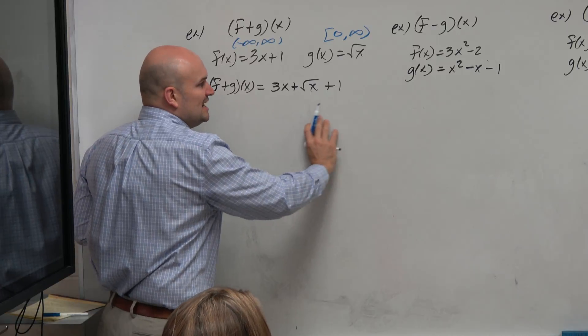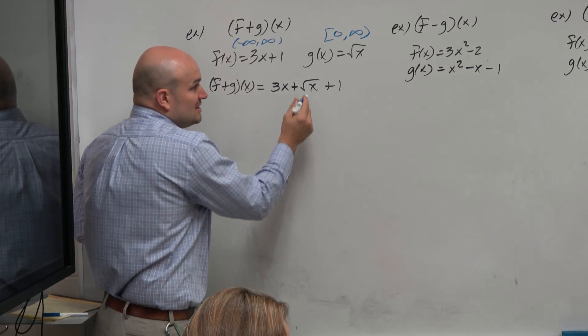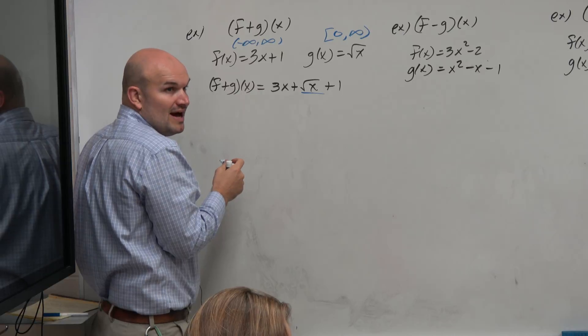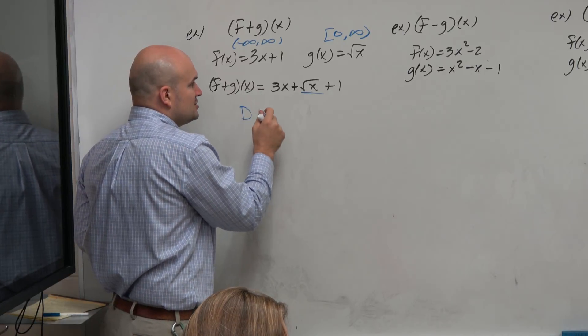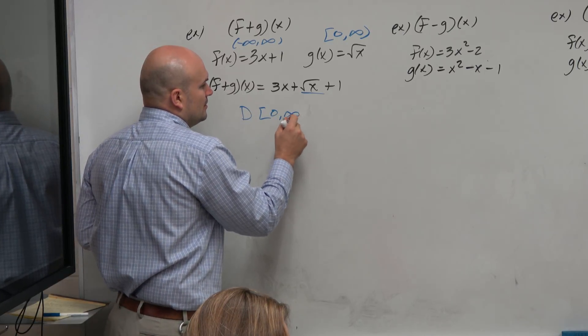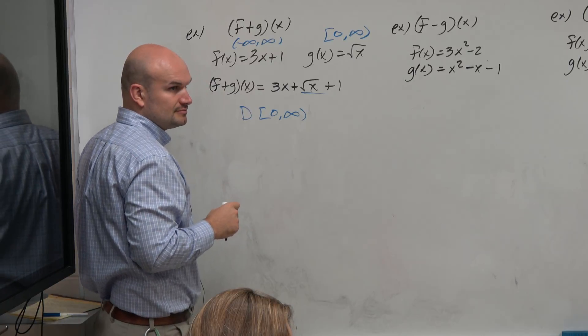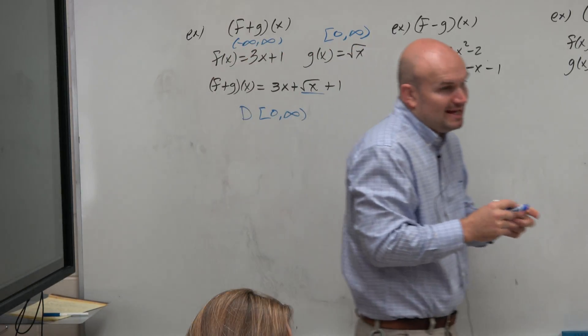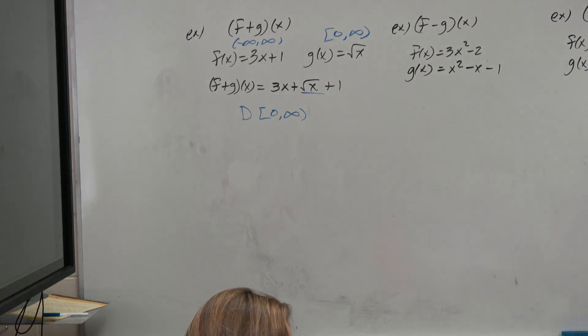So when we look at the combination, what I want you guys to see is the only restriction that we still have is the square root of x, right? So the domain is just going to be from 0 to infinity. So the combination, if you look at this, the domain is basically just going to be a combination of the two domains of our two functions.